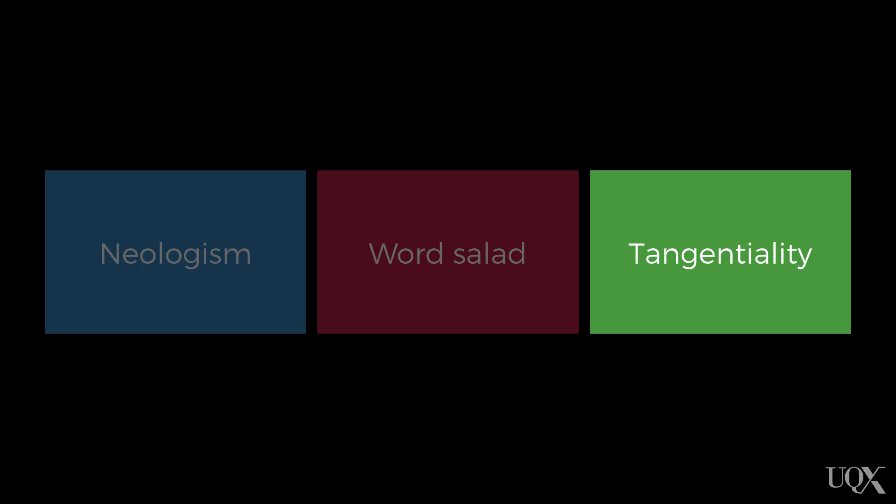Tangentiality reflects a disturbance in a person's associative thought patterns. They might start off talking about one topic and then move to another topic that has little apparent relevance to the original topic. Interestingly, most of us from time to time can actually demonstrate slightly tangential speech. For example, you might be talking with a friend and planning to watch a movie together. Talking about movies makes you think about the last time you saw a movie in the cinemas, so you might then begin talking about the movie you saw on that occasion. Generally speaking, most of us manage to return to the original topic fairly quickly, and we know that we have digressed — in other words, we have insight into what we have done.